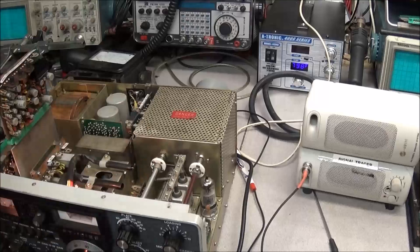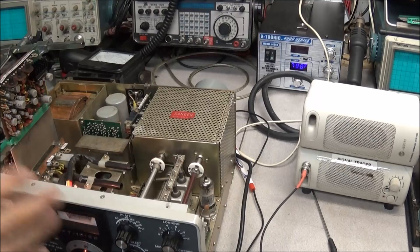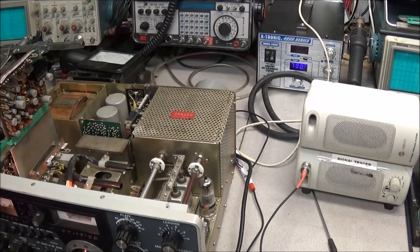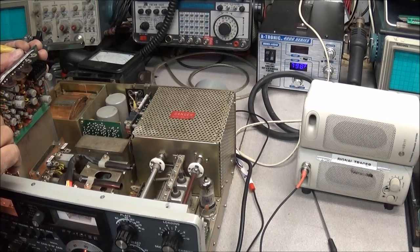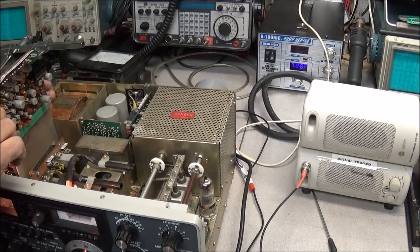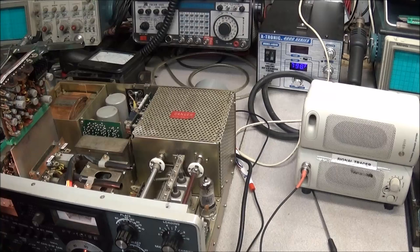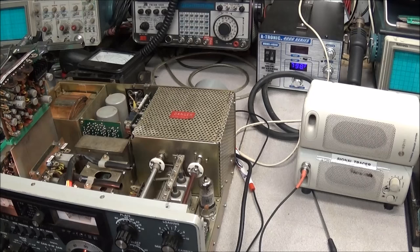One good thing about the signal tracer is you can probe around. Like right this minute, we hear this radio has very low receive. It's got a good S meter but the audio is down low so we're not sure what's going on. You can take your signal tracer and start probing through the audio. Just by doing that, what this tells me is there's a problem with the volume switch that we'll have to look at.